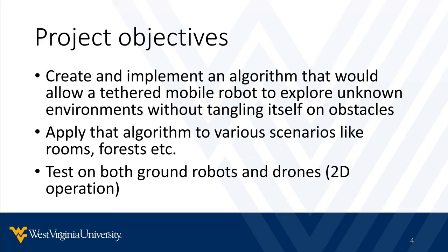With all that in mind, the objective for this project was to create and implement an exploration algorithm that would allow for a tethered mobile robot to explore any arbitrary environment, like a room or a forest or anything else, without tangling itself on any obstacles. The goal was to test it on both ground robots and drones, though drone operation would at first be limited to 2D. Any exploration algorithm can be boiled down to its two main parts – the exploration approach itself and the path-planning algorithm used in the process.